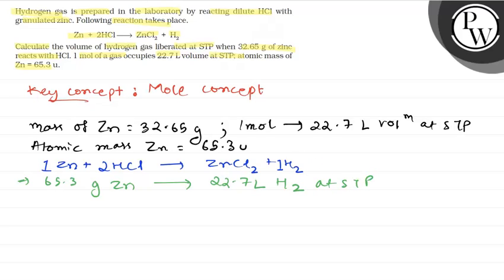Hence, we can say that 32.65 gram zinc will produce 22.7 multiplied by 32.65 divided by 65.3, which comes out equal to 11.35 liters of hydrogen at STP.